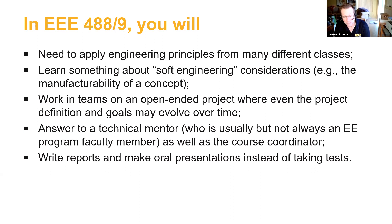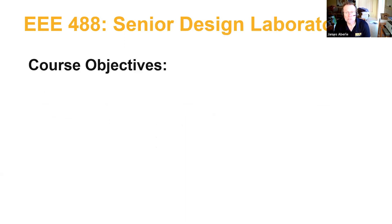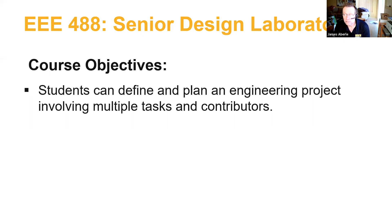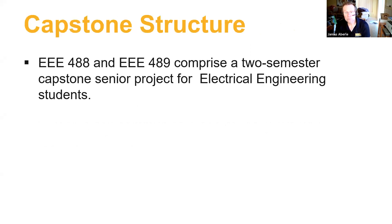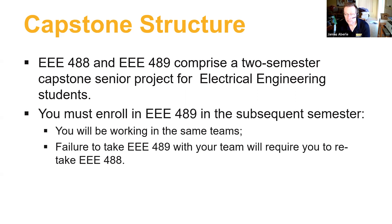It's worth reviewing what the course objectives are for EEE 488 — and similar ones for EEE 489. The course objectives are that students can define and plan an engineering project involving multiple tasks and contributors, and also that students can communicate and critically evaluate technical information. Being able to demonstrate to a potential employer that you can do these things is going to be extremely important for your career path. EEE 488 and EEE 489 are a two-semester capstone senior design project course for electrical engineering students. You have to enroll in EEE 489 in the subsequent semester and work in the same team throughout the sequence.